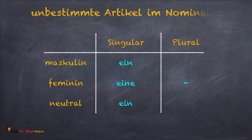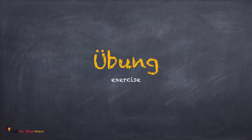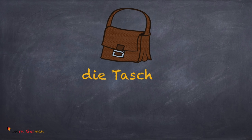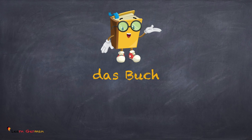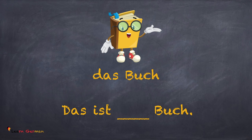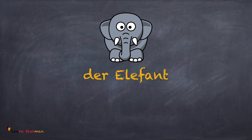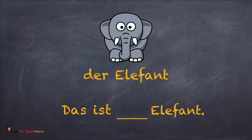Let's do a small exercise — Übung. In the following sentences, you have to fill in the blank with the unbestimmte article. Die Tasche — what would be the unbestimmte article for 'die Tasche'? Das ist eine Tasche. Das Buch — what is the unbestimmte article for 'Buch'? Das ist ein Buch. Der Elefant — what would be the unbestimmte article here? Das ist ein Elefant.